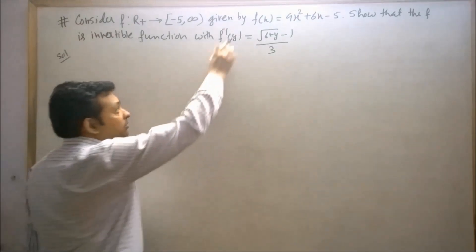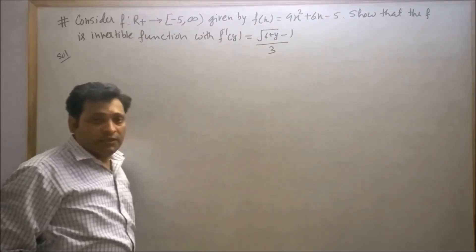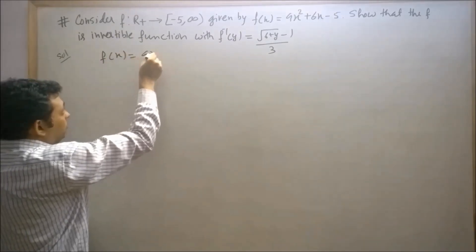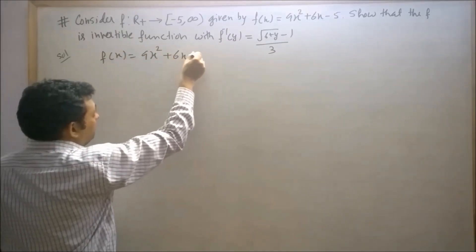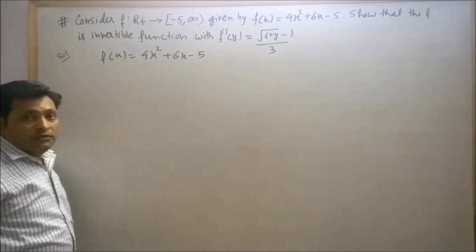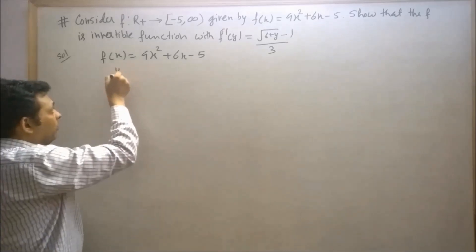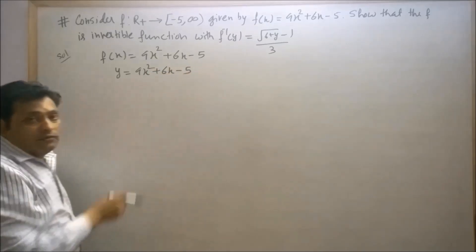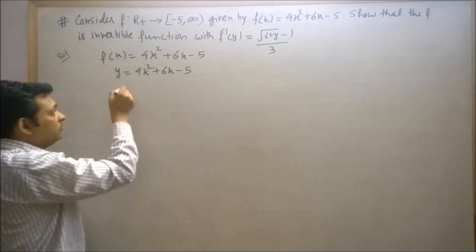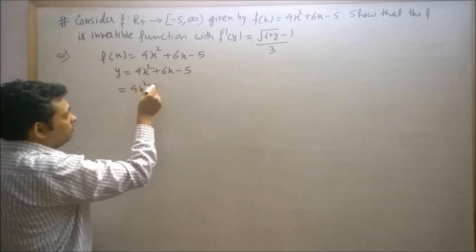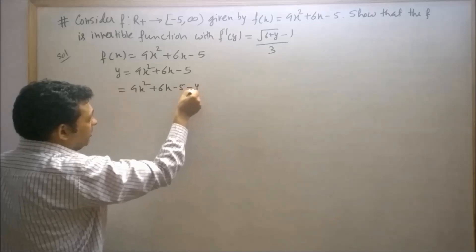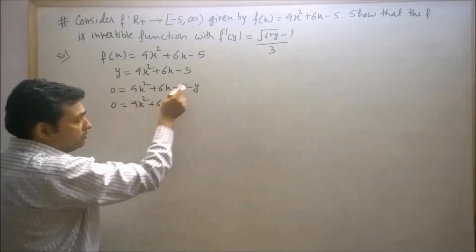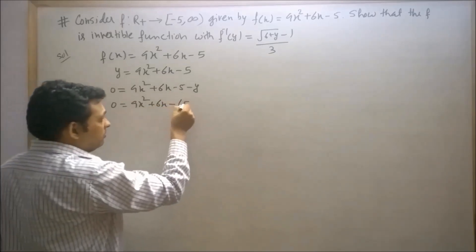Now we will prove that the given function is also onto. It is given that f(x) = 9x² + 6x - 5. Let y represent the range, so y = 9x² + 6x - 5. Transposing: 9x² + 6x - (5 + y) = 0.